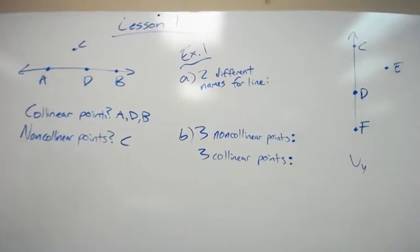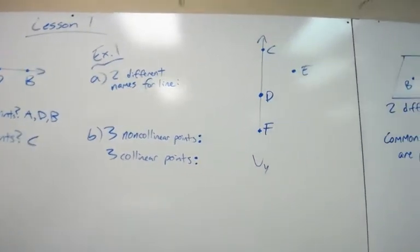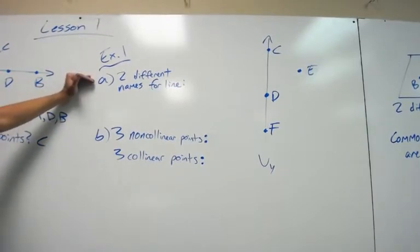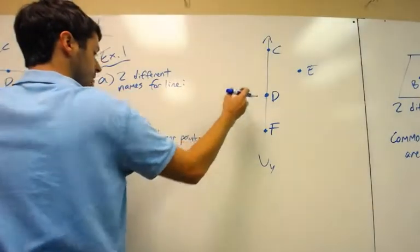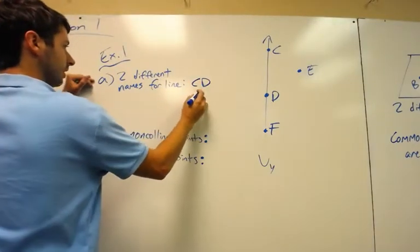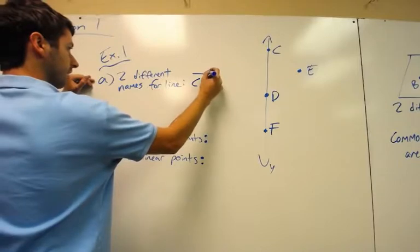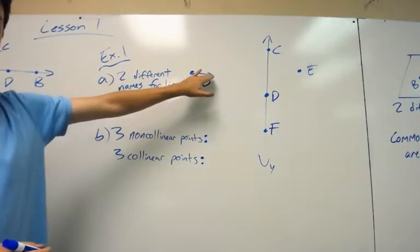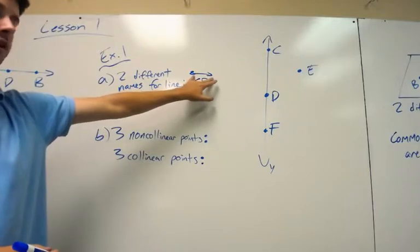So let's look at example one, just to show it a little bit further. Example one just says, what are two different names for line? How you label a line is you can use two of the capital letters, such as CD, and then on top of it, you have to draw a line. Now notice I drew arrows on each side of this line above CD.